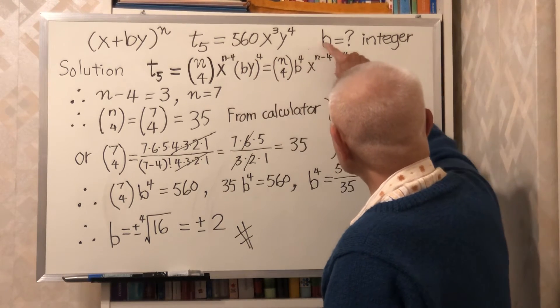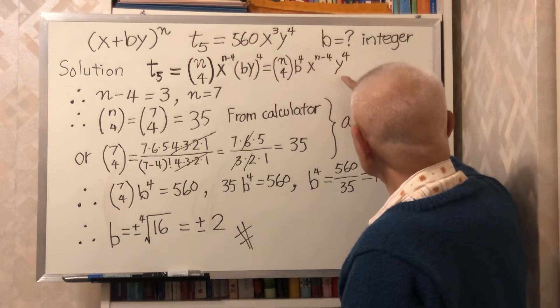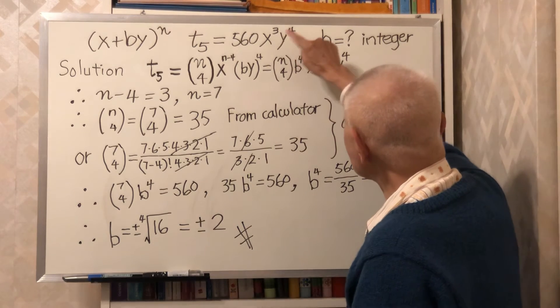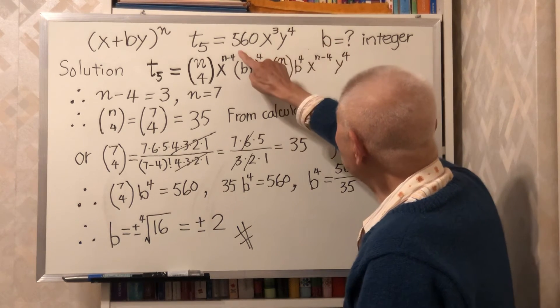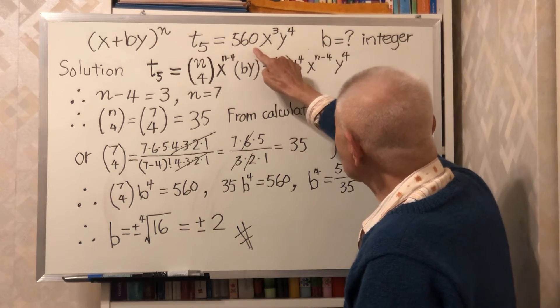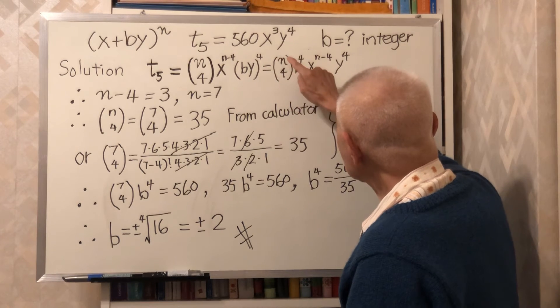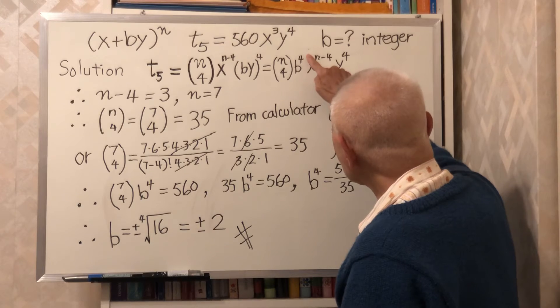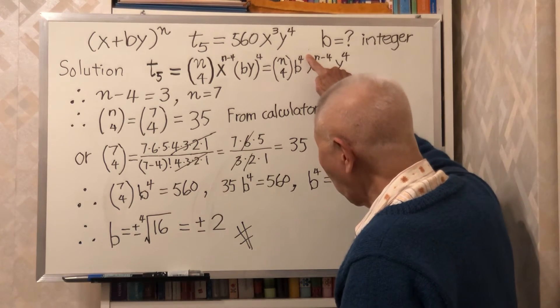Y to the exponent 4 is this. Therefore, 560 should equal to n choose 4 times B to the exponent 4.